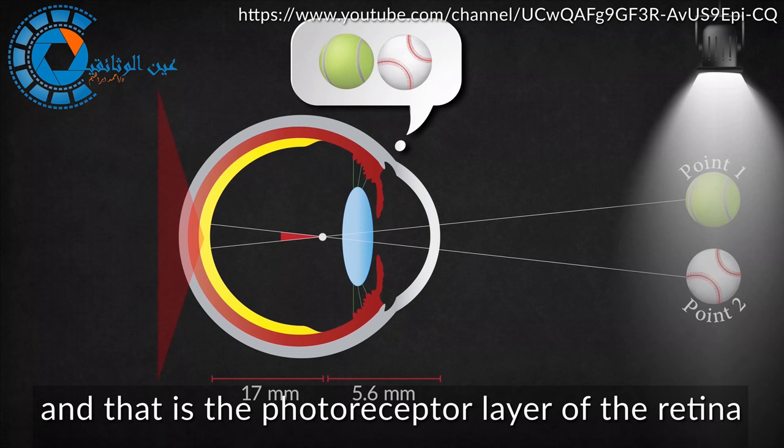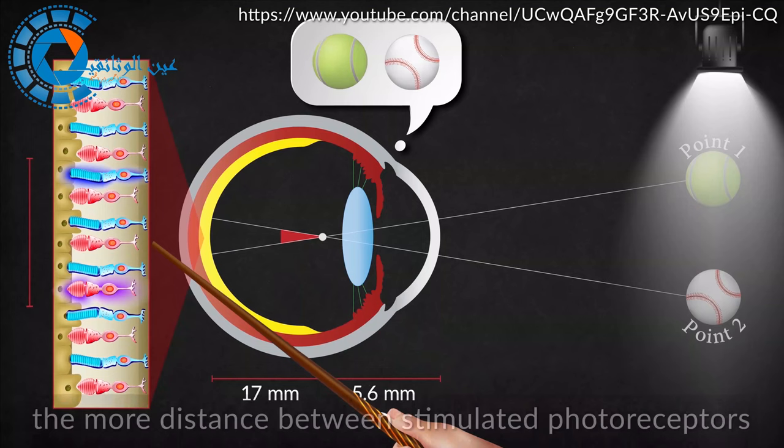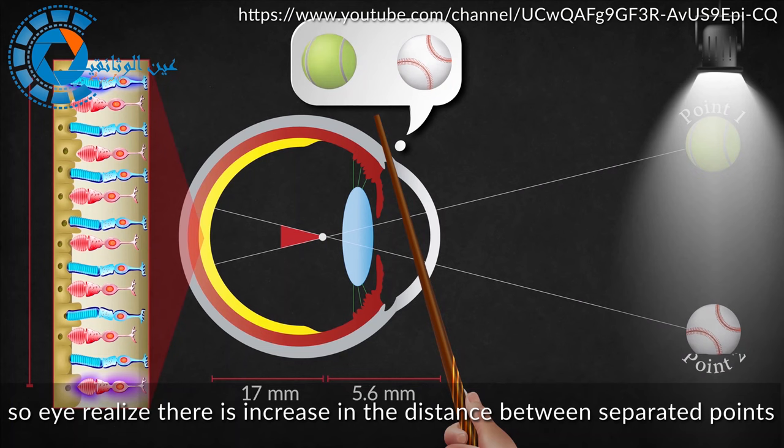And that is the photoreceptor layer of the retina. The more angle of resolution, the more distance between stimulated photoreceptors, so I realize there is increase in the distance between separated points.